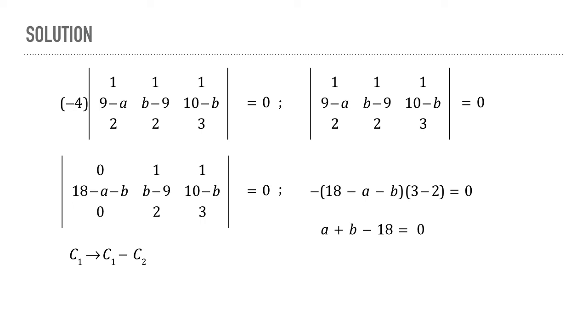Now replacing a with x and b with y, we find that the locus is x plus y minus 18 equals 0, which is obviously a straight line, and therefore the correct answer is option b.